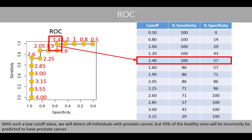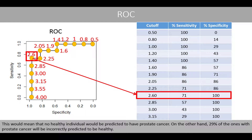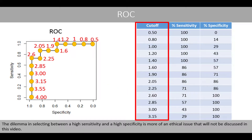With a cutoff of 1.4, we detect all individuals with prostate cancer, but 43% of healthy individuals will be incorrectly predicted to have prostate cancer. In contrast, if specificity is more important, we could select a cutoff of 2.6, giving 100% specificity and 71% sensitivity — meaning no healthy individual is incorrectly predicted to have cancer, but 29% of cancer patients will be incorrectly predicted to be healthy. This tradeoff is an ethical issue not discussed further here.